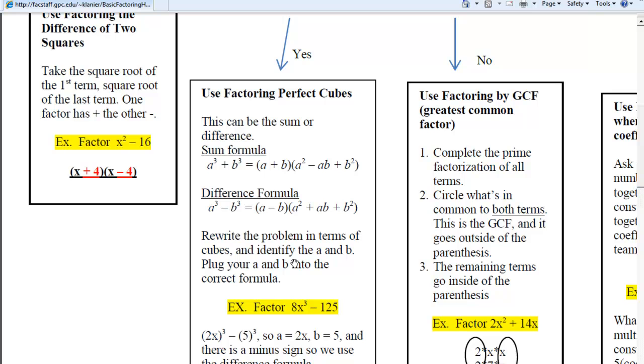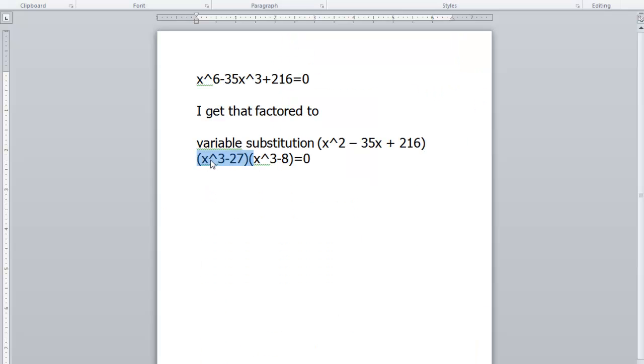And the way you factor this is you first have to rewrite the problem in terms of perfect cubes. So for us, what do you cube in order to get x cubed? So that means you have to take x and raise that to the third power.